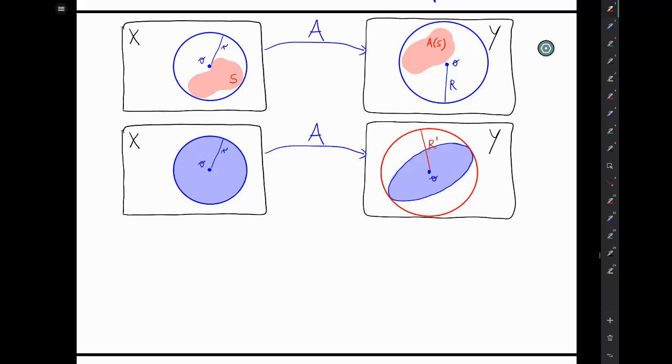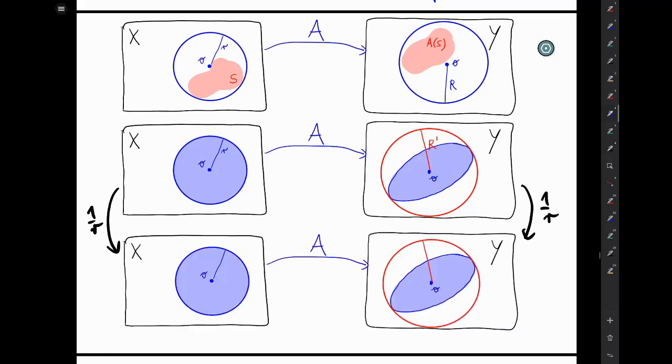Actually, we can simplify this further. Well, if we simply divide the whole scene by little r, we multiply by 1 over r on both sides. Then on the left,